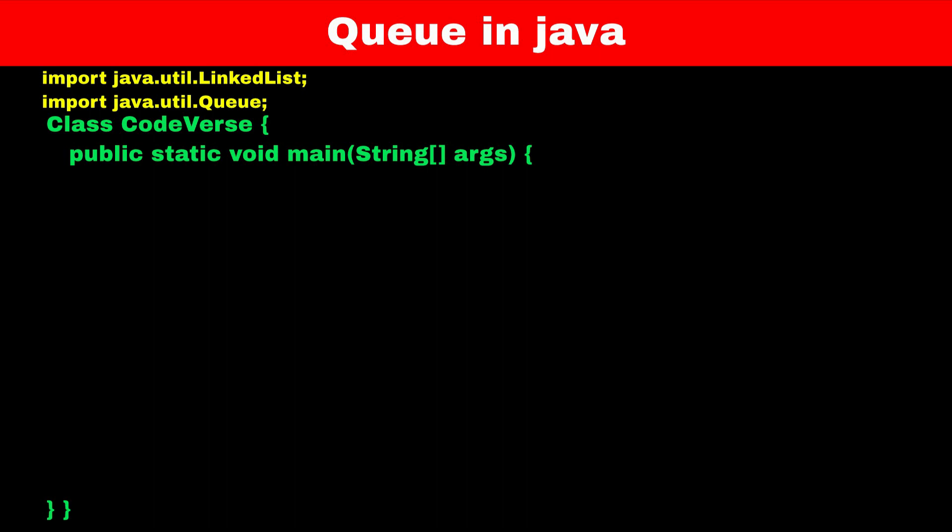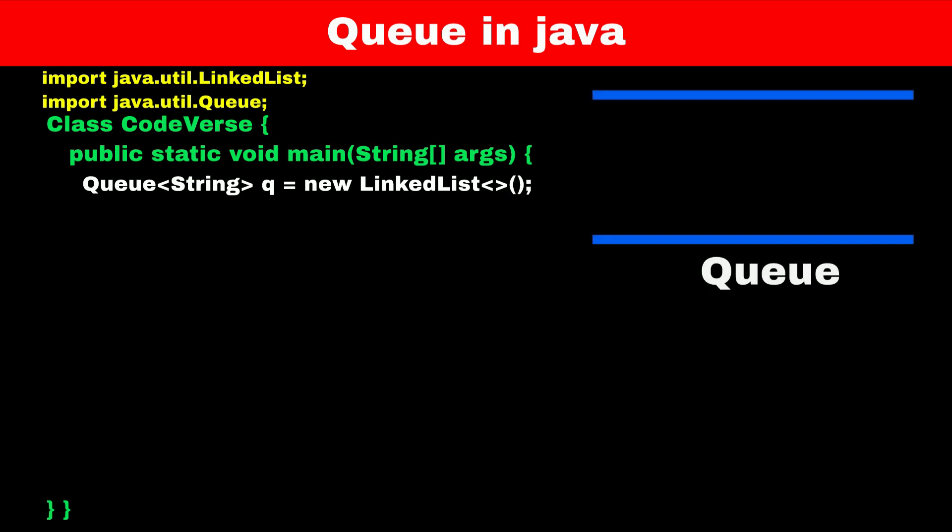In today's video, we will use the linked list implementation. To define a queue, create an object of the queue class with the data type mentioned in angle brackets, and after the equal-to operator, use the constructor for the linked list class. Now your queue is ready to use.